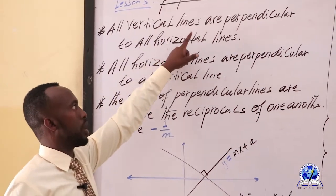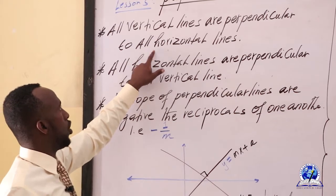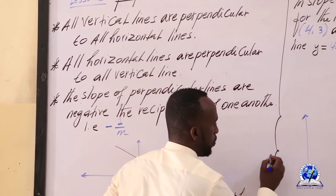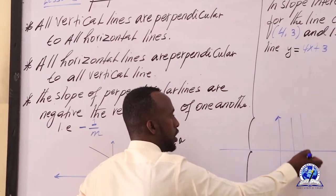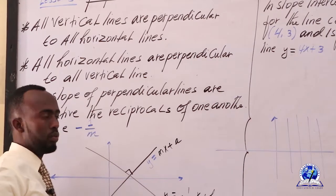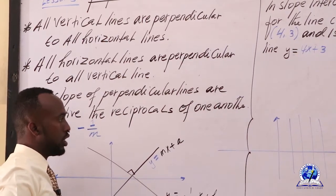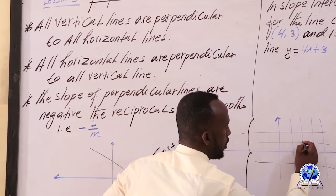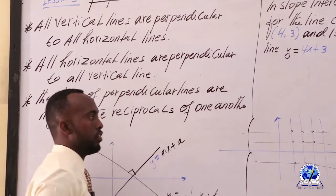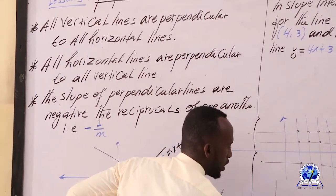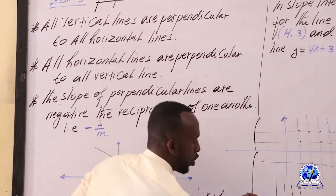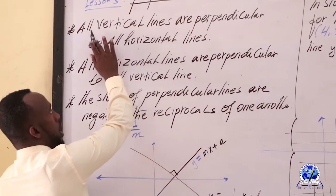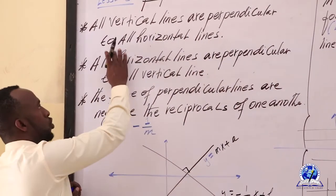All vertical lines are perpendicular to the horizontal lines. The vertical lines are perpendicular. If you want to see the vertical lines, the vertical lines are perpendicular to the horizontal lines.